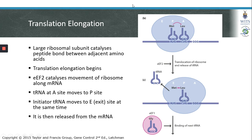When two transfer RNAs are bound at the A and P sites, the large ribosomal subunit can catalyze the formation of a peptide bond between the neighboring amino acids. Once this peptide bond is formed, EEF2 — elongation factor 2 — moves the ribosome along the mRNA strand. When the ribosome moves along the mRNA strand, the next transfer RNA, leucine, will move into the P site.